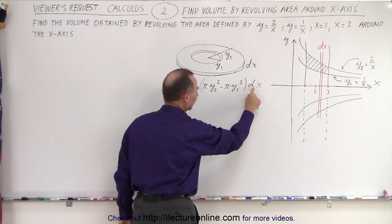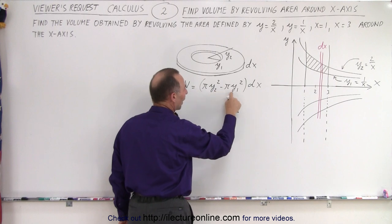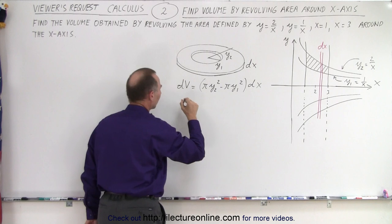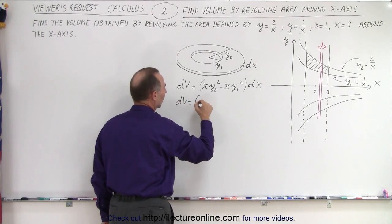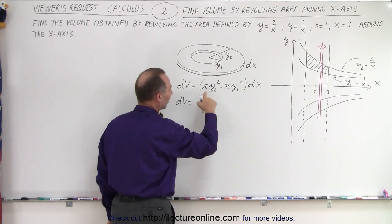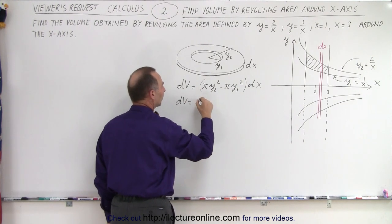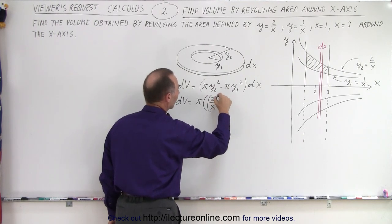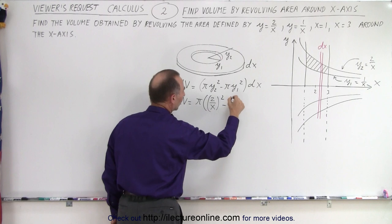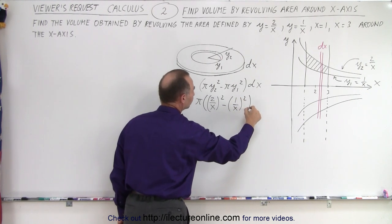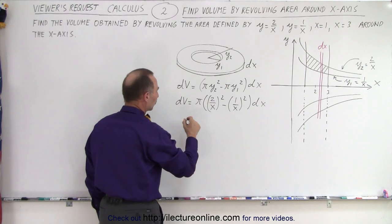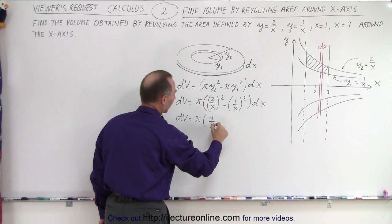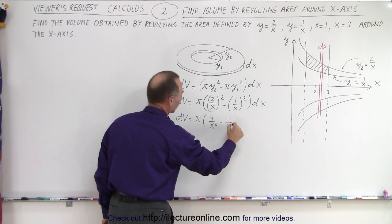Since we have dx here and this is defined in terms of y, we need to convert from y to x. So y1 is 1/x and y2 is 2/x. We can factor out π, so dV equals π times (2/x)² minus (1/x)² times dx. When we square that, we get dV equals π times (4/x² - 1/x²) dx.